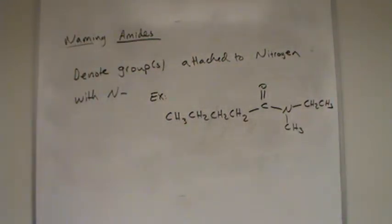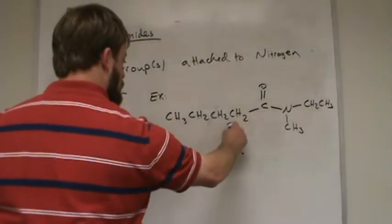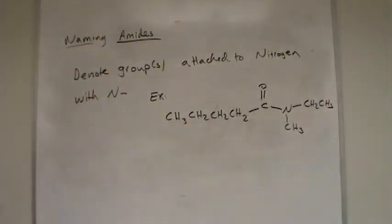So our acid portion has one, two, three, four, five carbons. So pentanoic acid. It would be, if it was a primary amide, it would just be pentanamide.